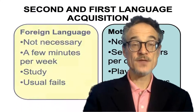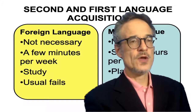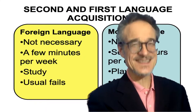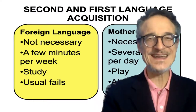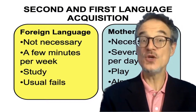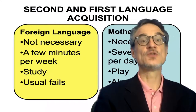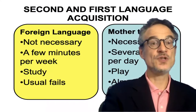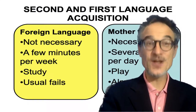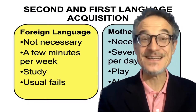On the other hand, foreign language or second language acquisition — well, a foreign language is not really necessary. You don't really need English if you live in Japan. It may be useful, it may be nice to have. You may get a better job, be able to talk to more people, enjoy movies and books, or find it helpful if you travel. But to be really honest, a foreign language is not really necessary.